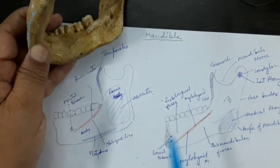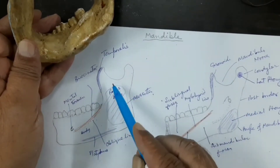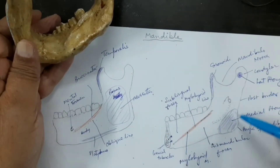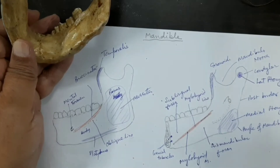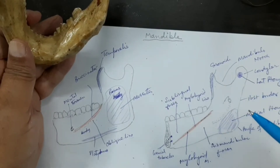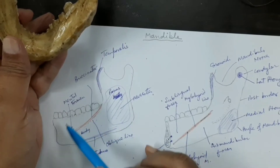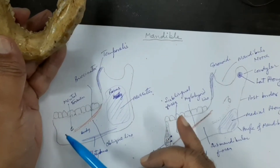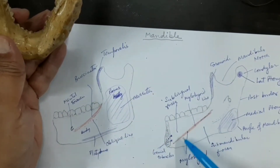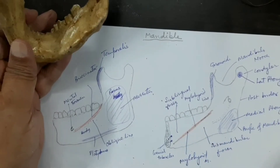So most of the insertions are in the ramus. On the lateral surface: temporalis and masseter. The muscles of mastication — lateral pterygoid and medial pterygoid — are also inserted onto the ramus. The body gives, from its external surface, the origin of the buccinator from the oblique line, and on the mylohyoid line the origin of the mylohyoid muscle.